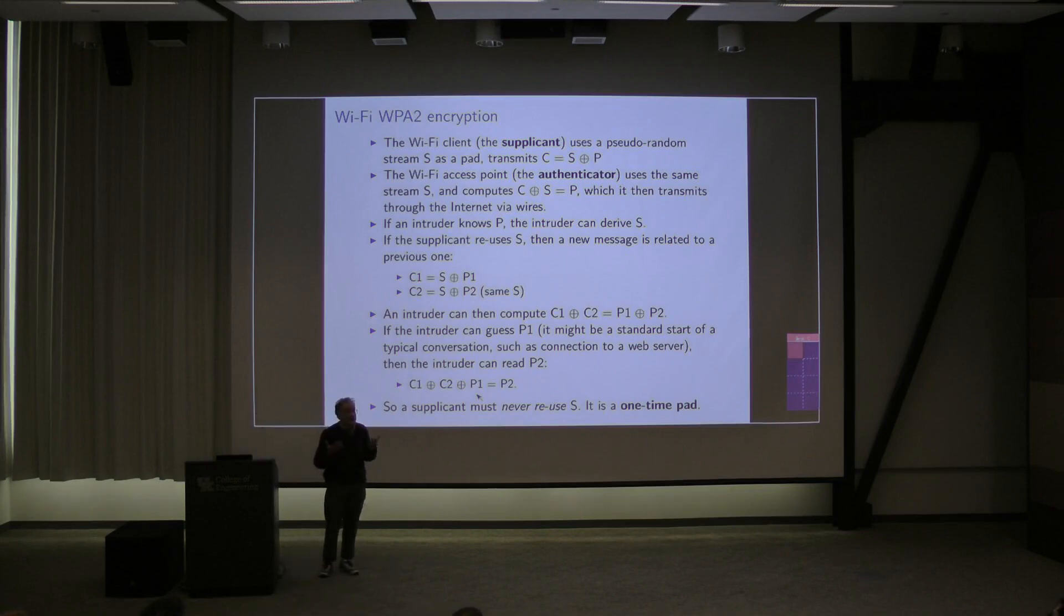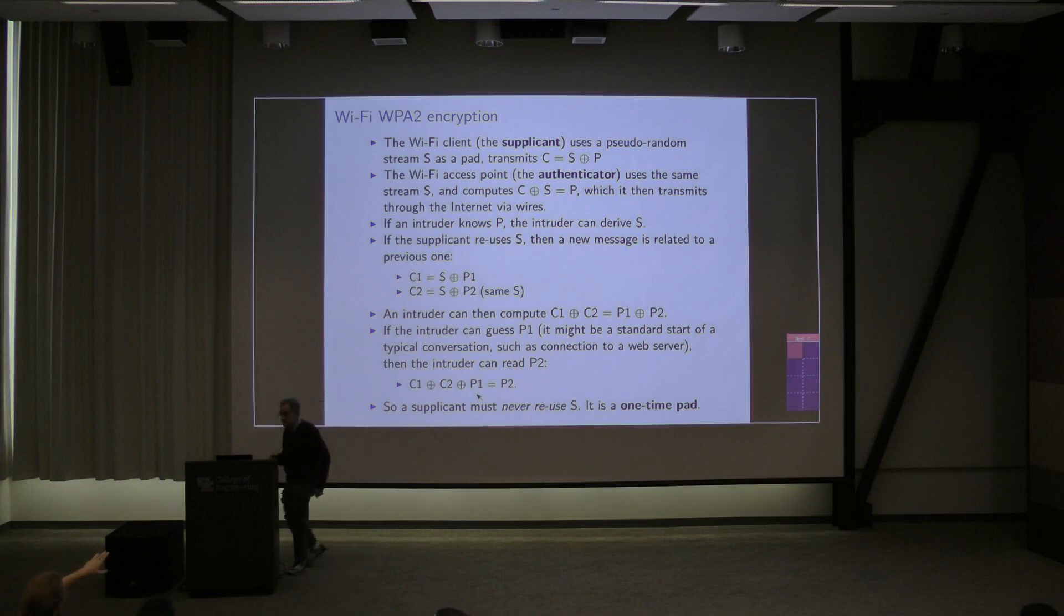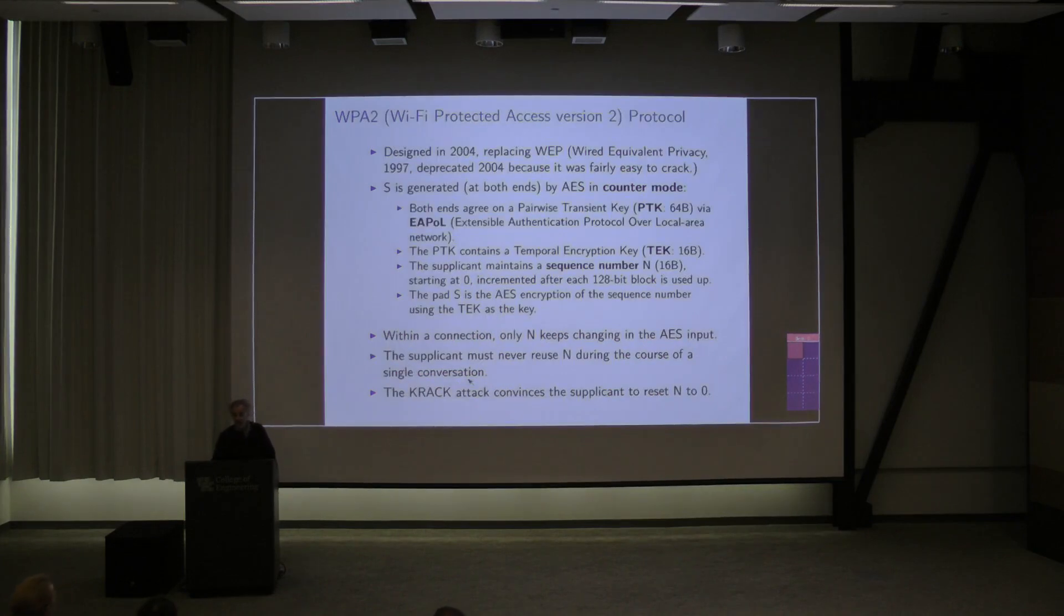I'll use some abbreviations. The plain text I'll call P, cipher text C. The pad I'll call S for stream, because I was using P for something else. Then the cipher text, which I build by just exclusive or bitwise, the pad and the plain text, that's going to be random. The fact is, you can't look at it and see anything that tells you anything at all about the plain text.